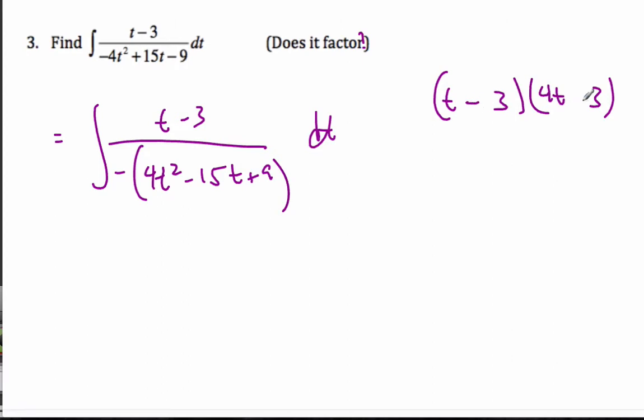and one of them is going to be 3, and this is going to be 9. And then I want that to be a minus. So this is going to be a minus. So this is negative 12. Negative 3 gives me the negative 15. There's the factor. And so it's equal to t minus 3 over negative (t minus 3)(4t minus 3) dt.